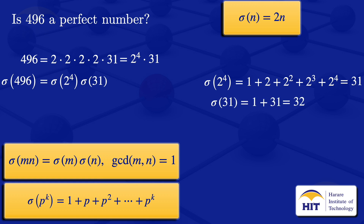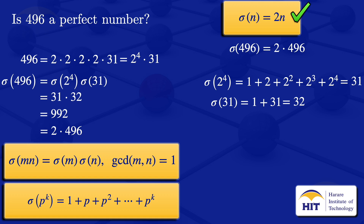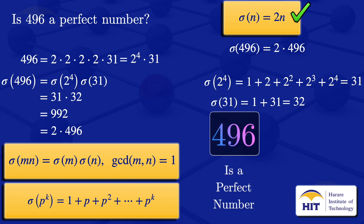Substituting these two values — sigma(2^4) equals 31 and sigma(31) equals 32 — we get 31 times 32, which gives us 992. Factoring out a 2, we see that equals 2 times 496. So sigma(496) equals 2 times 496, which satisfies the condition sigma(n) equals 2n. Therefore, we conclude that 496 is a perfect number.